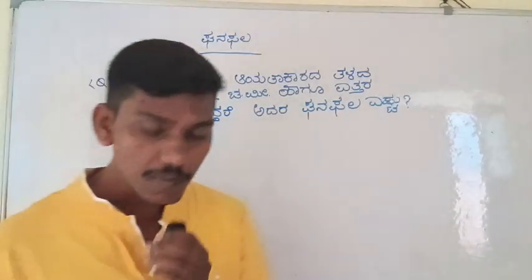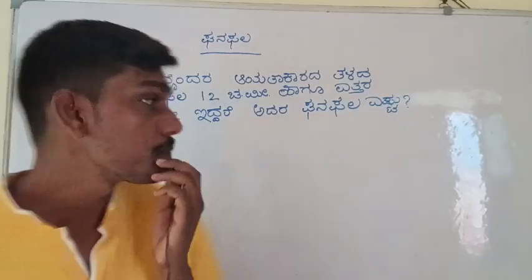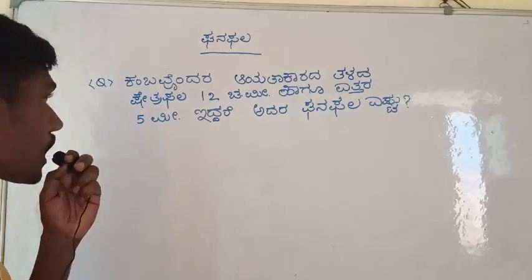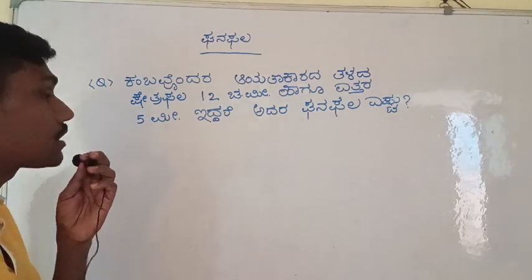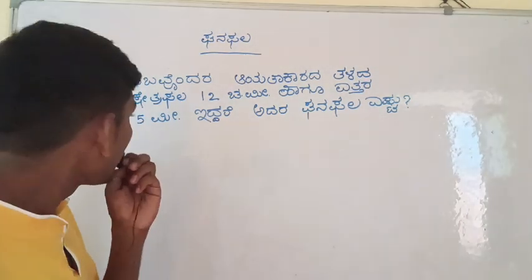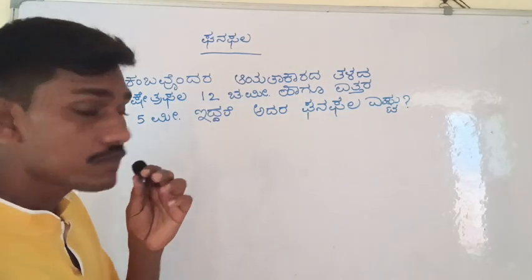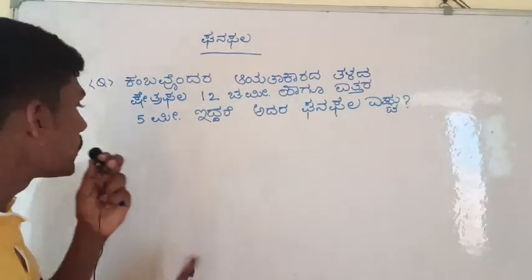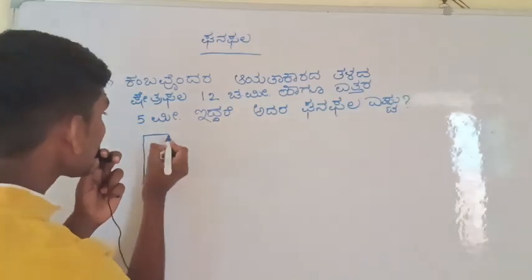Welcome to the class. What is your question? How do you ask? 1, 2, 3, 4 meters and 4 meters. 1, 2, 5 meters. 1, 2, 4.